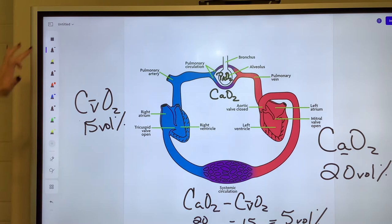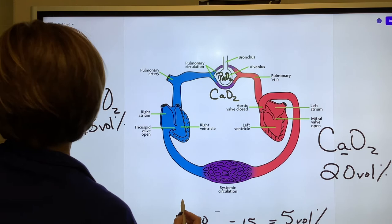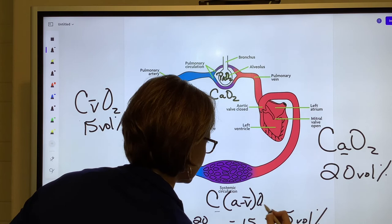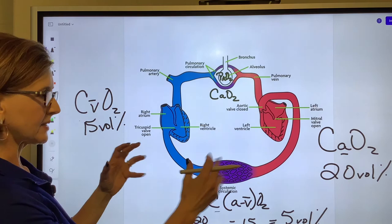but how you will normally see this written is like this. Okay? So A to V difference, 20 minus 15, is the amount of oxygen the tissues have extracted. So with this very simple concept, you should be able to plug in all the components that make up each one of these and figure out how it affects tissue oxygenation.